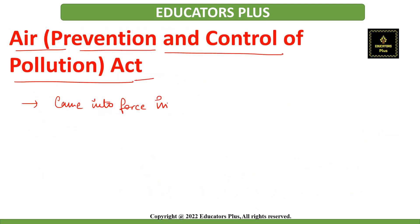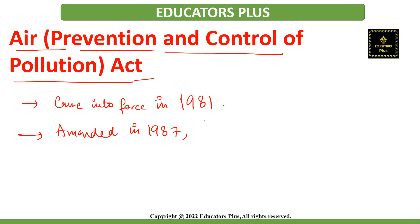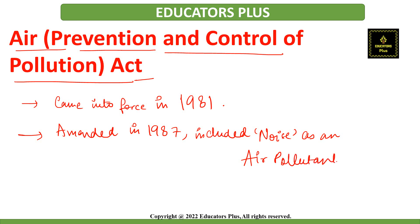Particularly talking about India, the Air Prevention and Control of Pollution Act — which we have also discussed in detail in our previous videos — came into force in 1981. In 1987, it was amended and noise was included as an air pollutant. The provisions of this act mention that unwanted sounds created by humans, animals and machines which disturb the environment and humans is called sound pollution.